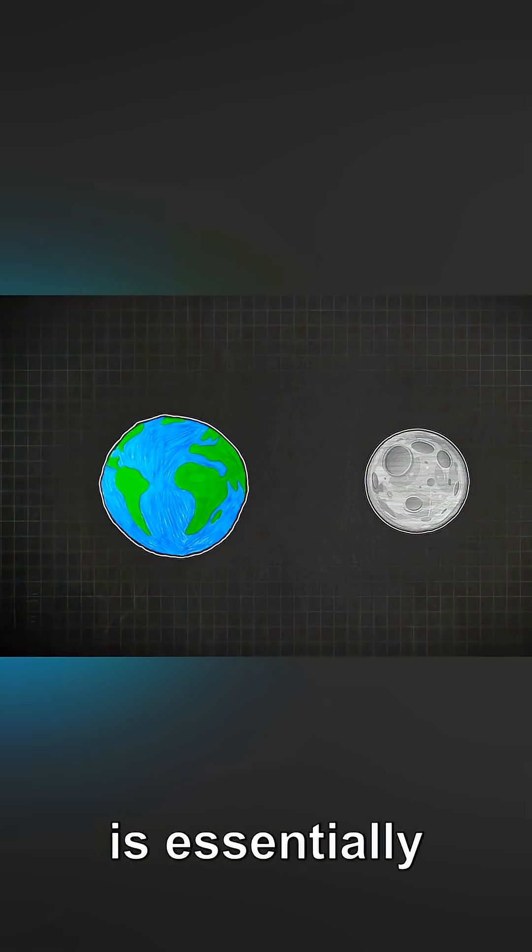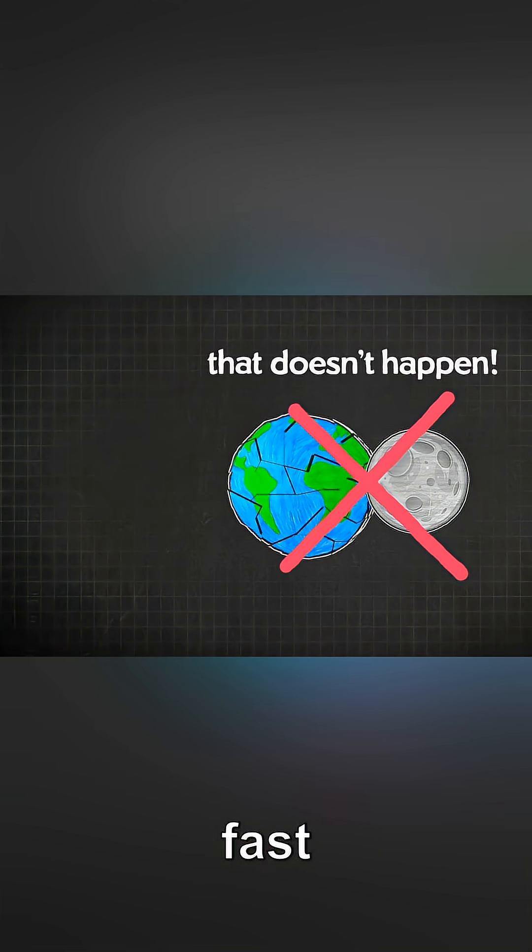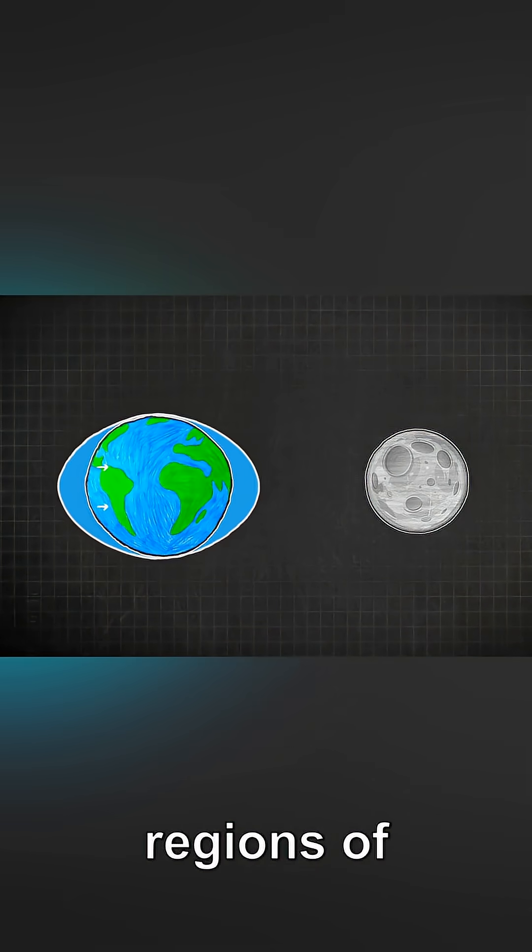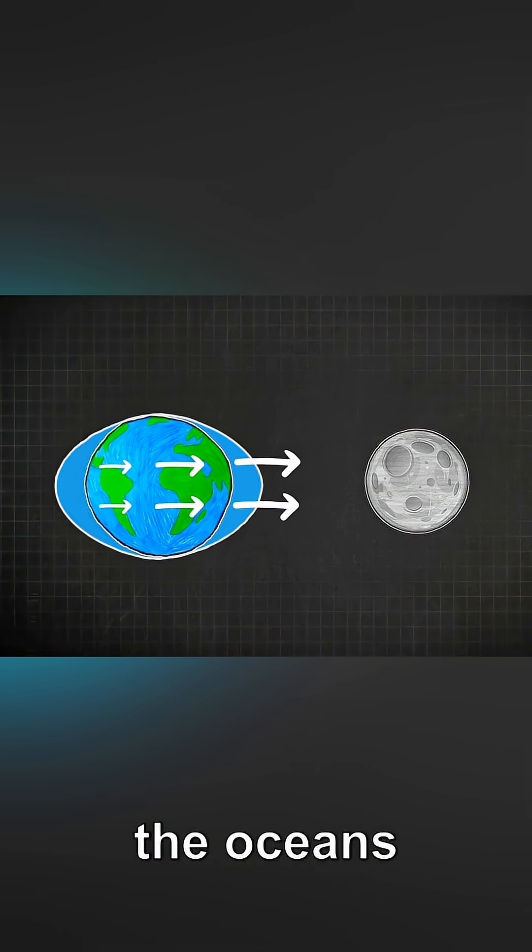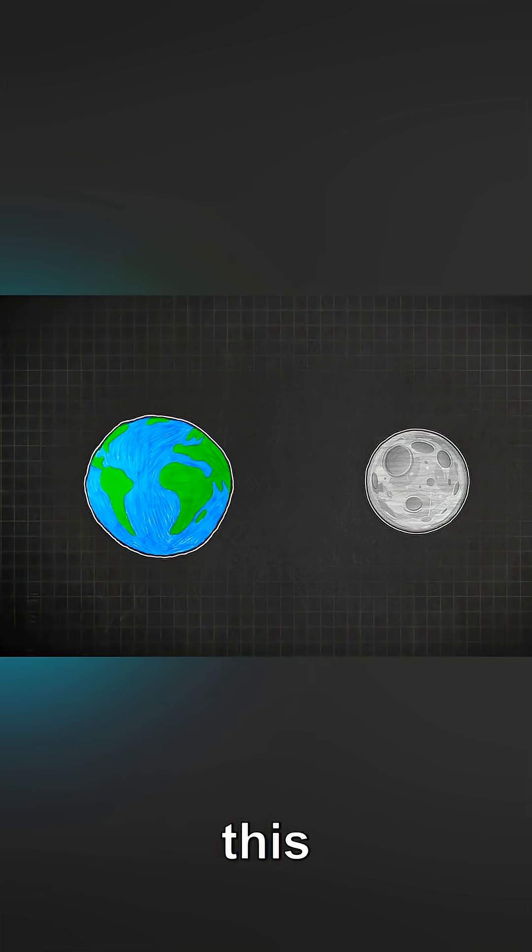So if you think about it, the earth is essentially falling towards the moon because of gravity, but they don't ever actually collide because the moon is moving so fast sideways that it's in orbit. So the moon's gravity pulls on different regions of earth differently and pulls harder on the oceans closer to the moon than on the earth itself, which makes this happen, right?